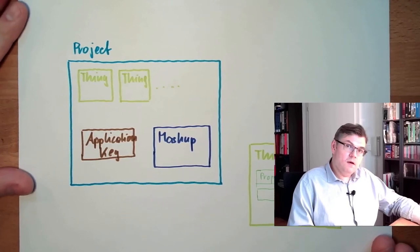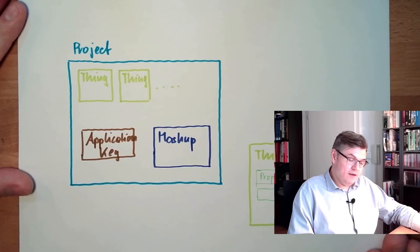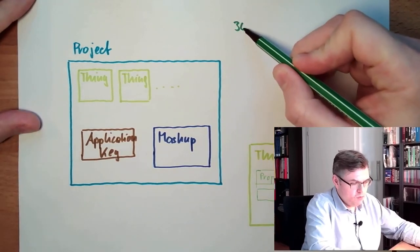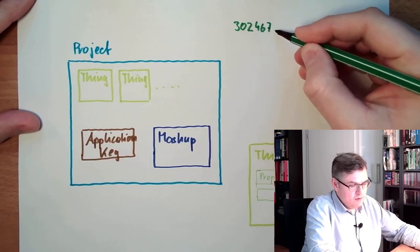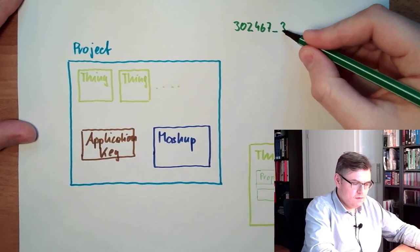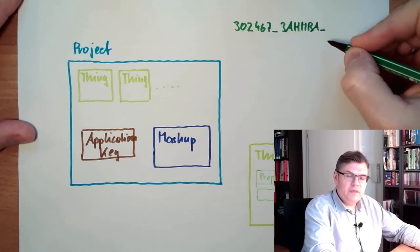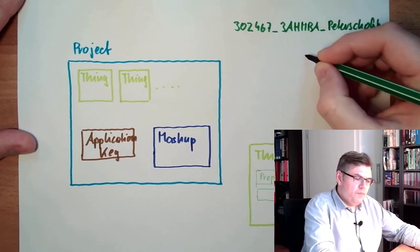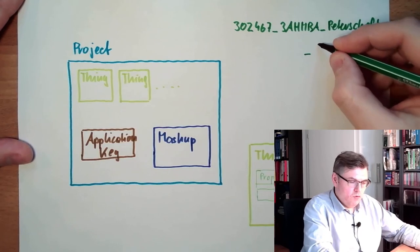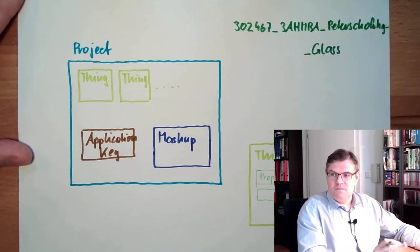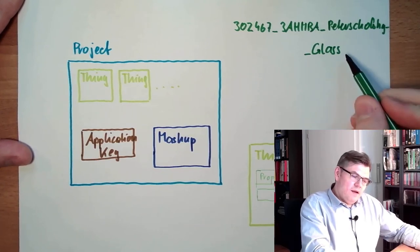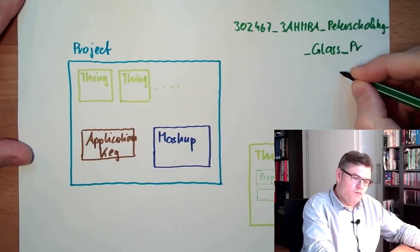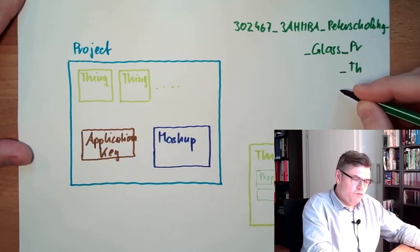Here at least in school, we use a numbering scheme. We will always start with our school number, 302467, then we'll add the class, then we'll add our name, so in my case it's Petashowski. Then we'll add the project name, so the first project will be class.